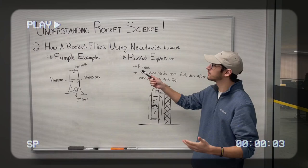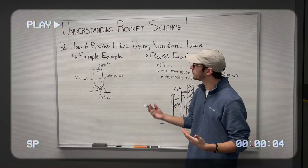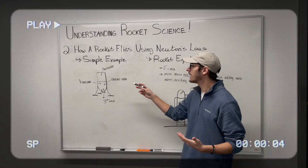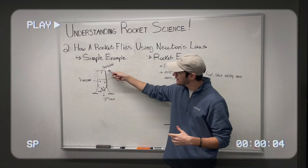So after understanding Newton's laws for understanding rocket science, we have to understand how a rocket flies applying those laws. The first thing to start with is a very simple example using a bottle rocket. A bottle rocket, which is something we're going to demonstrate at the end of this video, is made using vinegar and baking soda, which when combined, create a chemical reaction that causes pressure inside the bottle to form at the top.